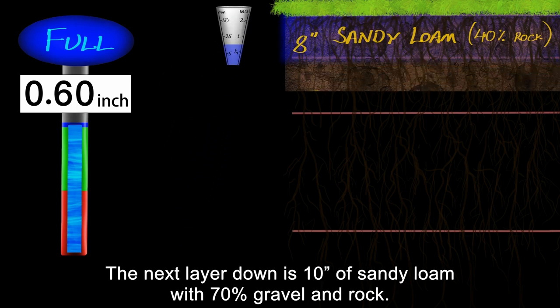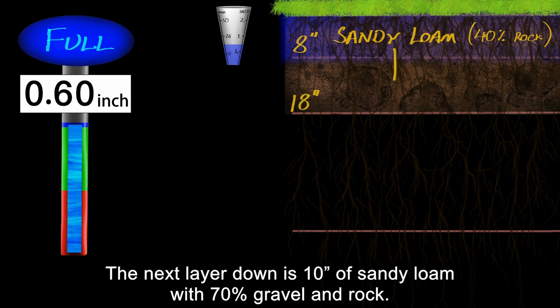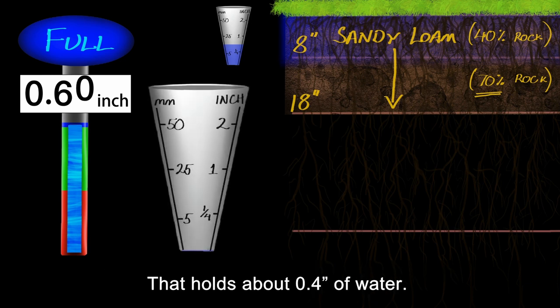The next layer down is 10 inches of sandy loam, with 70% gravel and rock. That holds about four tenths of an inch of water.